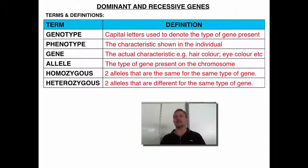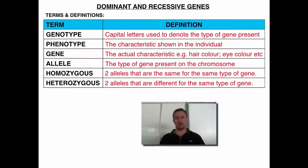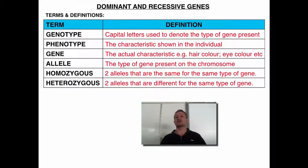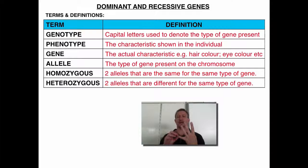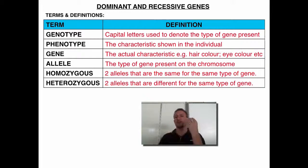An allele is a different type of the gene — which is basically big B or little b. The allele basically talks about the type of gene that you've got, so you can have a variety of different types. If we think about eye colour, you could have a blue allele, a brown allele, a grey allele, a green allele — it gives you a variety of different things. They're all coding for the gene eye colour, but we've got different alleles which are possible.